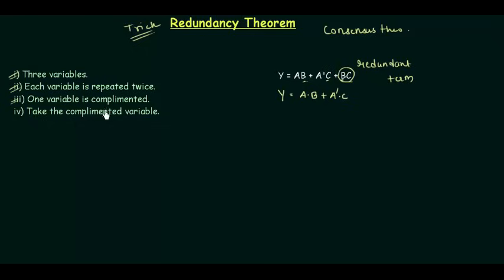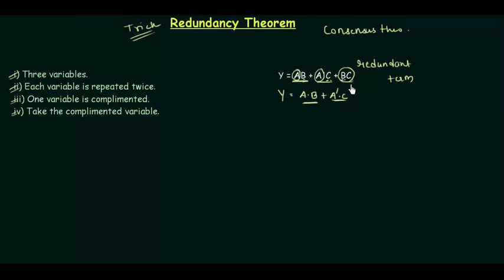Condition number three says one variable is complemented, and a is complemented whereas b and c are not. The last condition says take the terms in which the complemented variable is present. Since a was complemented, we take a·b or a-complement·c. In the last term there was b·c but no a, therefore we omit b·c. This is how you use the redundancy theorem — it is a very simple trick to apply.